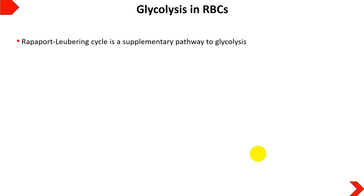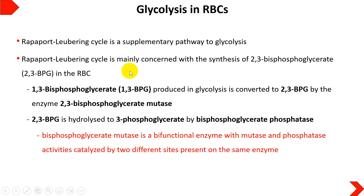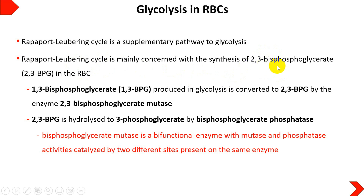The Rapoport-Luebering Cycle is a supplementary pathway to glycolysis in red blood cells. It is mainly concerned with the synthesis of 2,3-bisphosphoglycerate (2,3-BPG). In the main glycolysis pathway, 1,3-bisphosphoglycerate is formed, but here it slightly deviates: with the help of 2,3-bisphosphoglycerate mutase, 1,3-bisphosphoglycerate is converted into 2,3-bisphosphoglycerate.